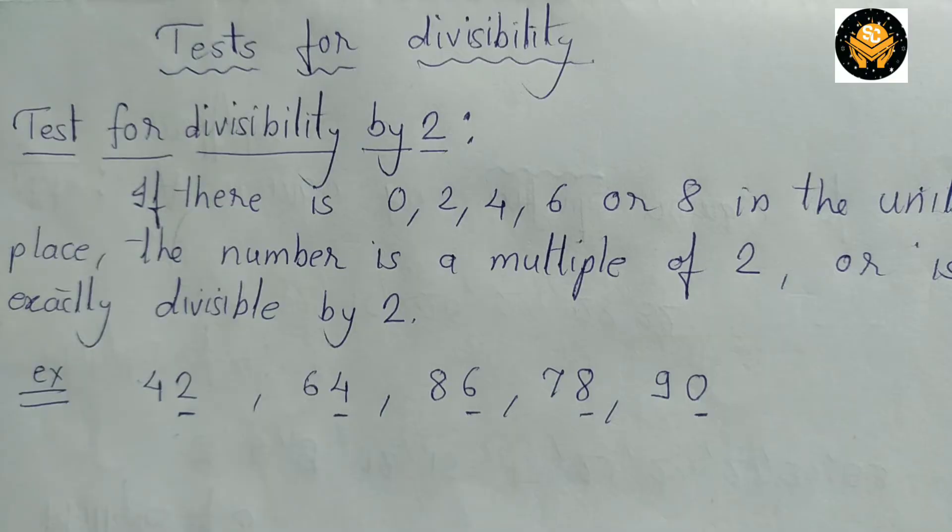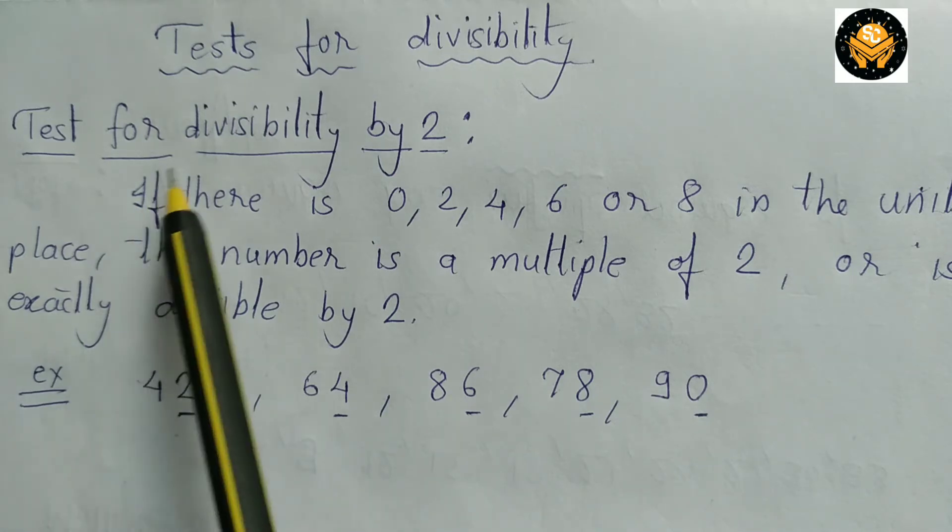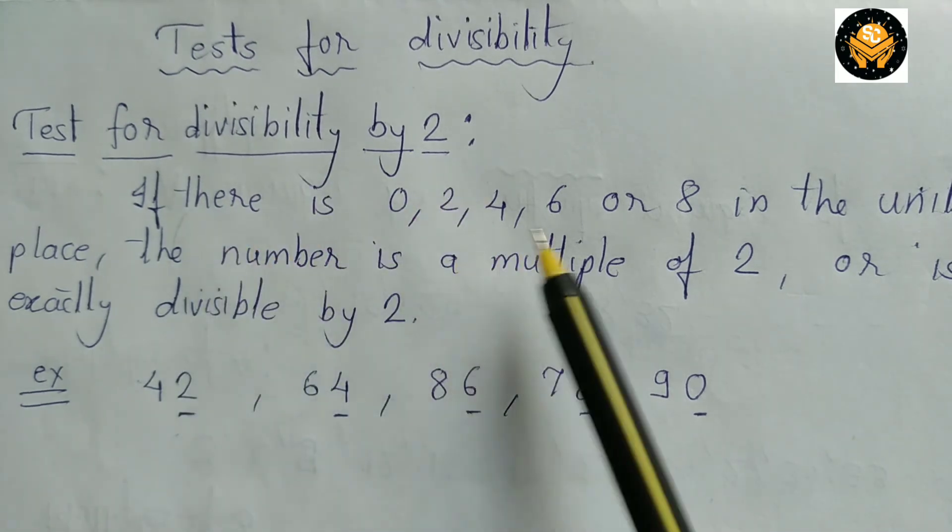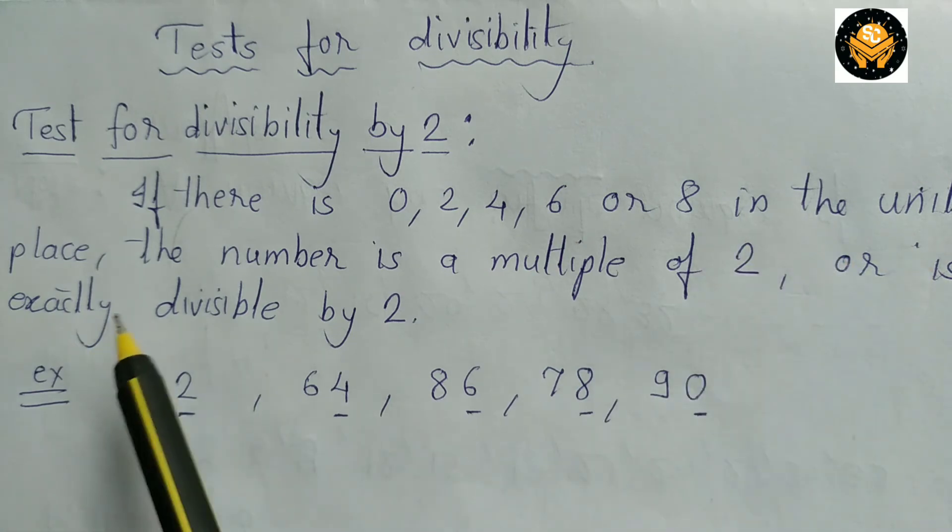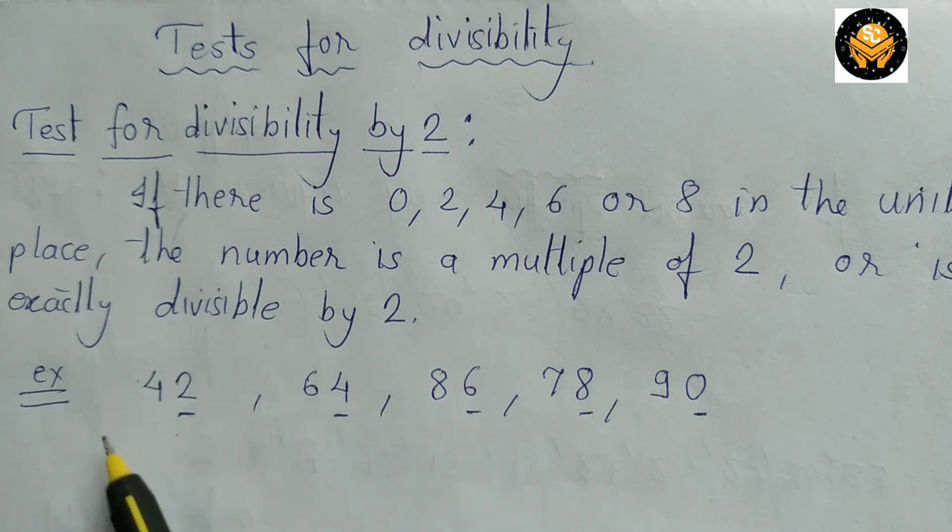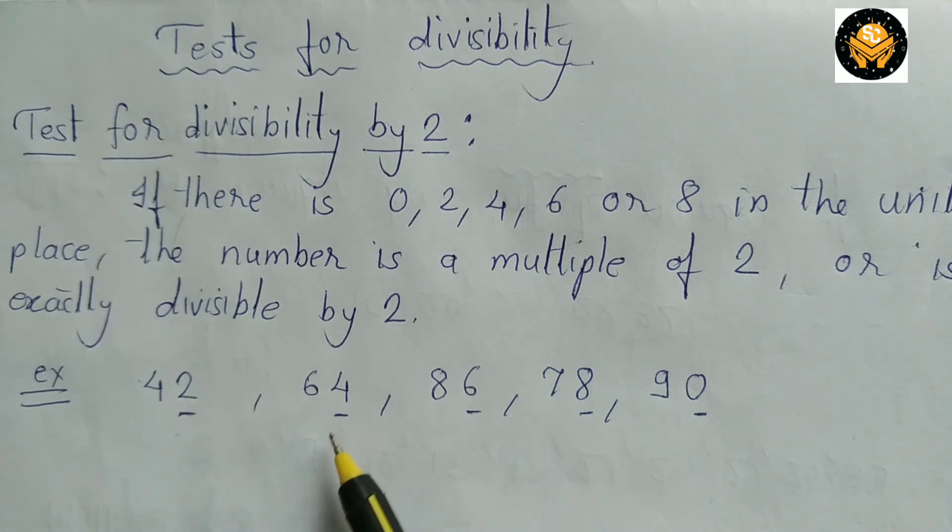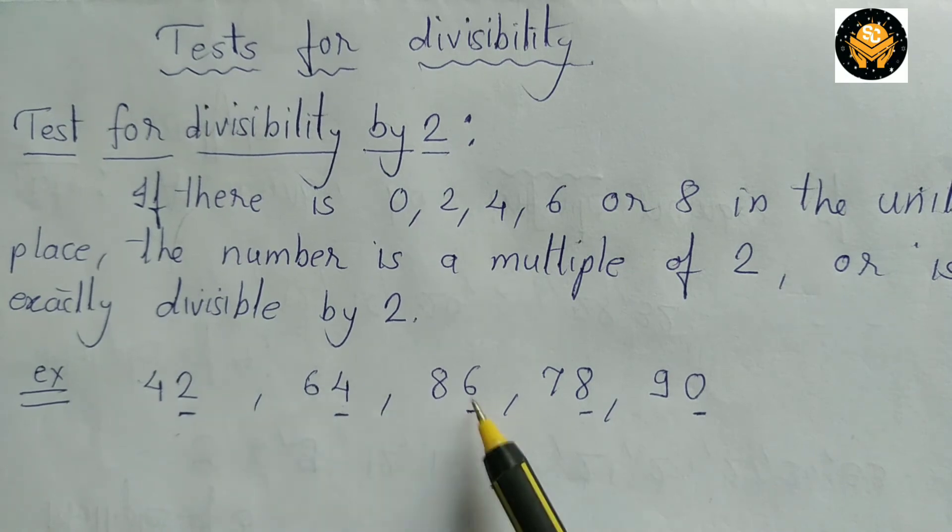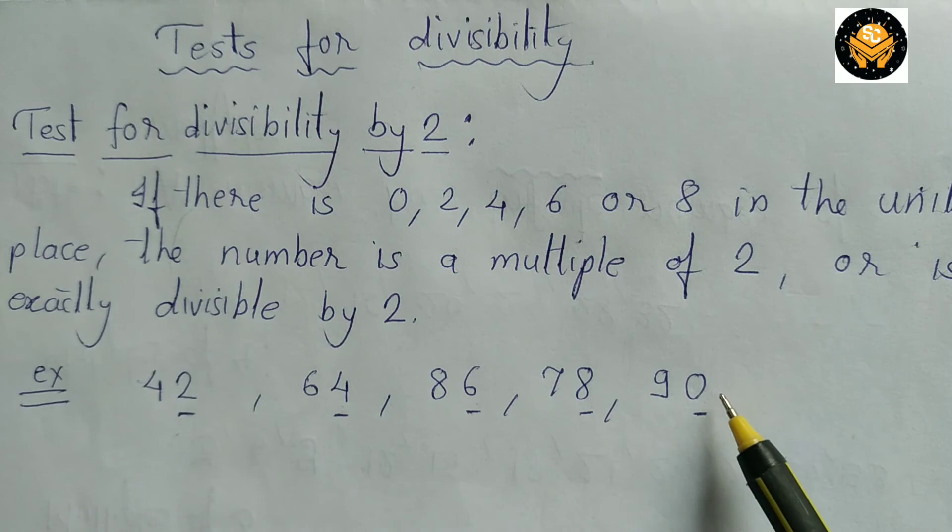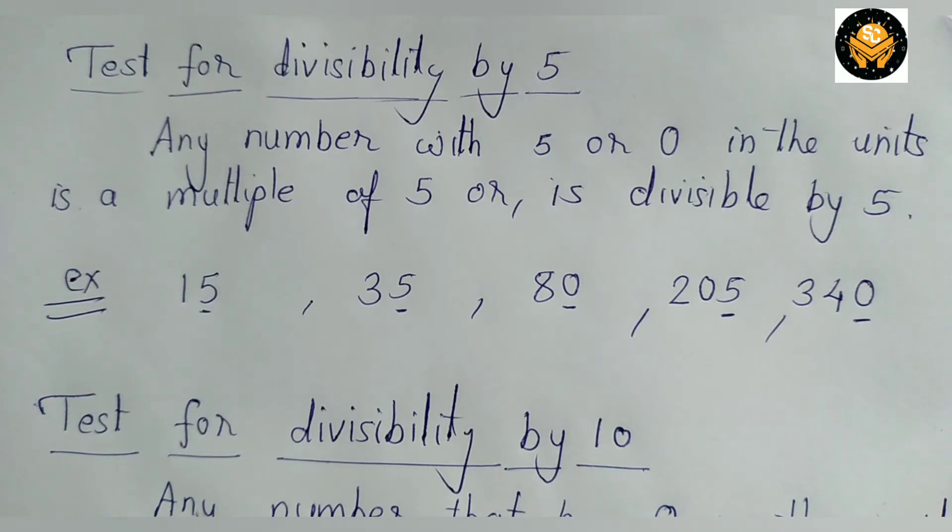Now let's see how to find whether the given number is multiple of 2 or is exactly divisible by 2. If there is 0, 2, 4, 6 or 8 in the unit place the number is a multiple of 2 or is exactly divisible by 2. Now in this example here on unit place the number is 2. Here on unit place the number is 4. Here 6, here 8 and here 0. It means these all numbers are divisible by 2.